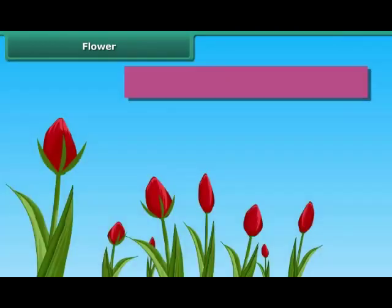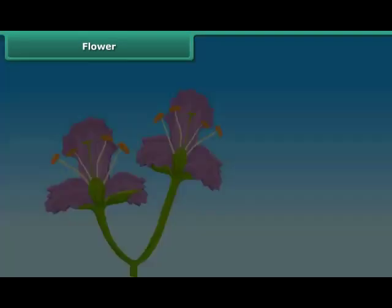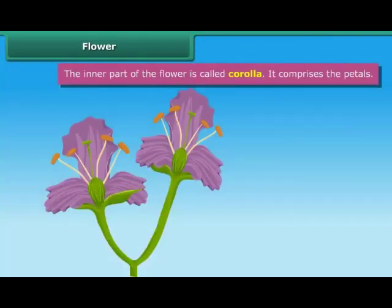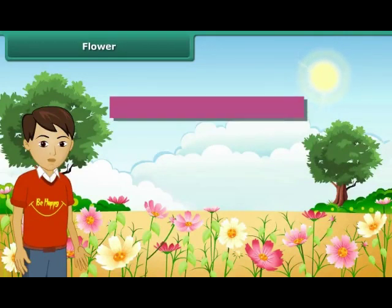The outer part of the flower is known as calyx. It consists of green leaf-like sepals. The inner part of the flower is called corolla. It comprises the petals. Different flowers have petals of different colors. Petals attract pollinators towards the flower.